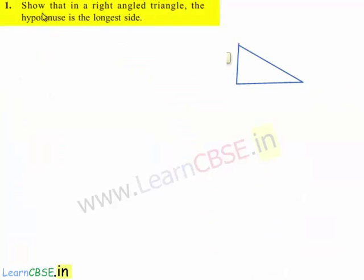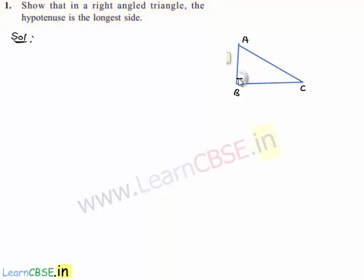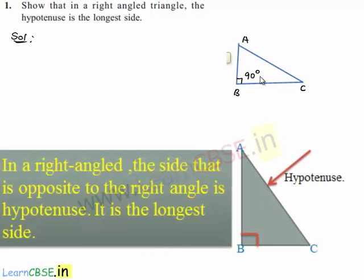Moving on to the first question: show that in a right angle triangle, the hypotenuse is the longest side. Moving on to the solution, let us consider a right angle triangle ABC, which has a right angle at B. Therefore, AC will be our hypotenuse.